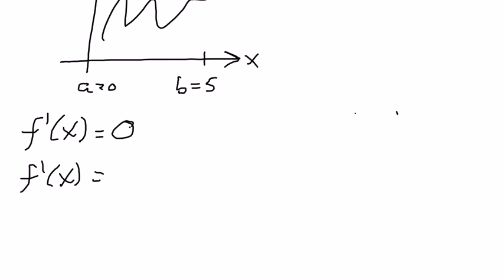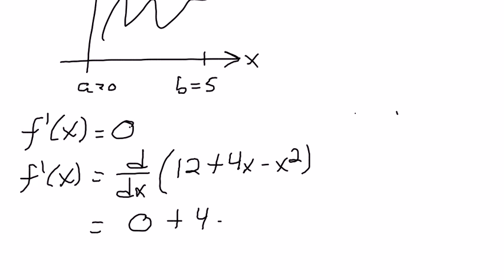So the derivative of f(x) with respect to x, we're taking the derivative of 12 + 4x - x², is going to be 0 because the derivative of any constant is 0, plus 4 minus 2x.